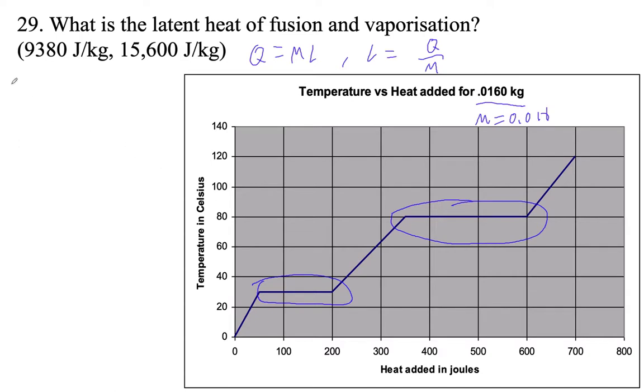So for fusion, this heat starts at 50 and ends at 200. So Q is 200 minus 50, which is 150 joules.